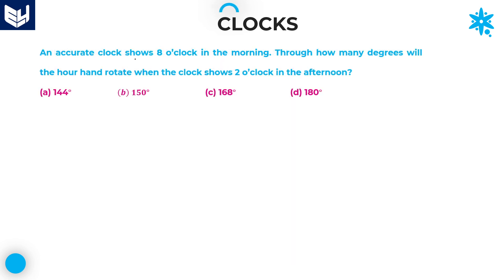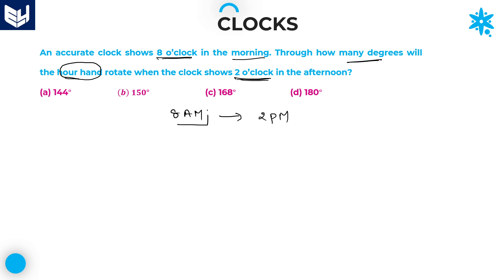An accurate clock shows 8 o'clock in the morning. Through how many degrees will the hour's hand rotate when the clock shows 2 o'clock in the afternoon? Here the start time is 8 a.m. and the end time is 2 p.m. The total time gap between these two is 6 hours.